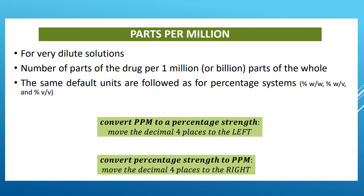The same default units apply as in the percentage system. You already know percent concentration — weight per weight, weight per volume, and volume per volume. Now we are going to discuss how to convert parts per million to a percentage strength.